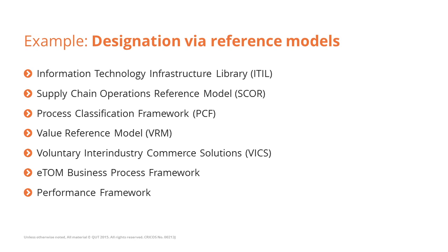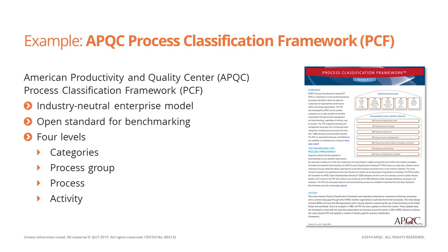Let's consider the Process Classification Framework as an example. It is industry neutral and also an open standard for benchmarking, meaning that each process is given certain metrics and expected target values so that the reference model can also be used during the analysis phase of the BPM cycle to benchmark performance. This reference model is organised according to four levels of abstraction: categories, process groups, processes, and activities.